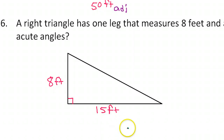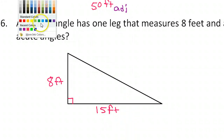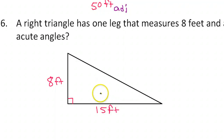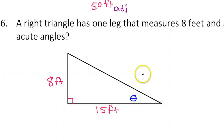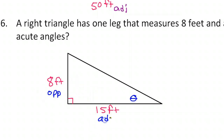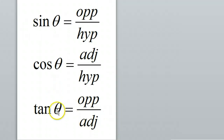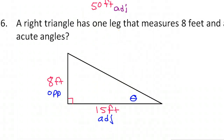How do we find angles? We use inverse trig functions. So just pick an angle — say this angle right here, I'll call it theta. Then the 8 is opposite and the 15 is adjacent, so that is the tangent function. The tangent of an angle is opposite over adjacent, so the tangent of theta is going to equal 8 over 15.